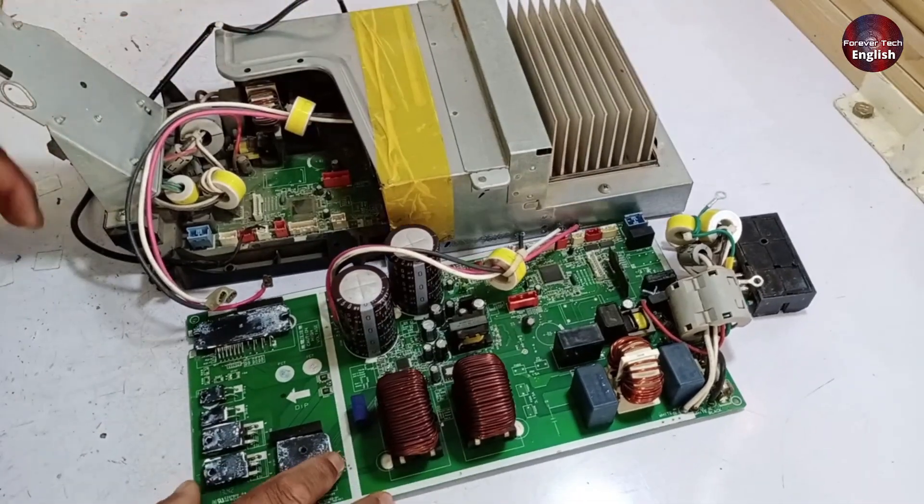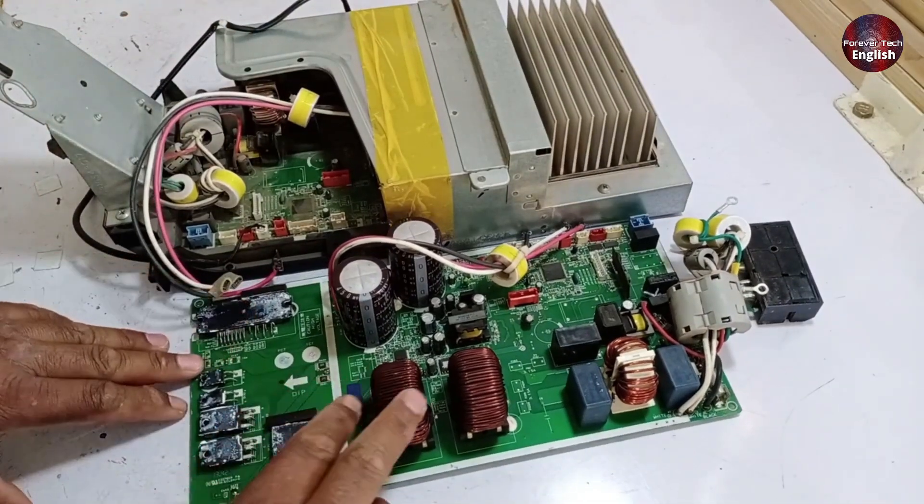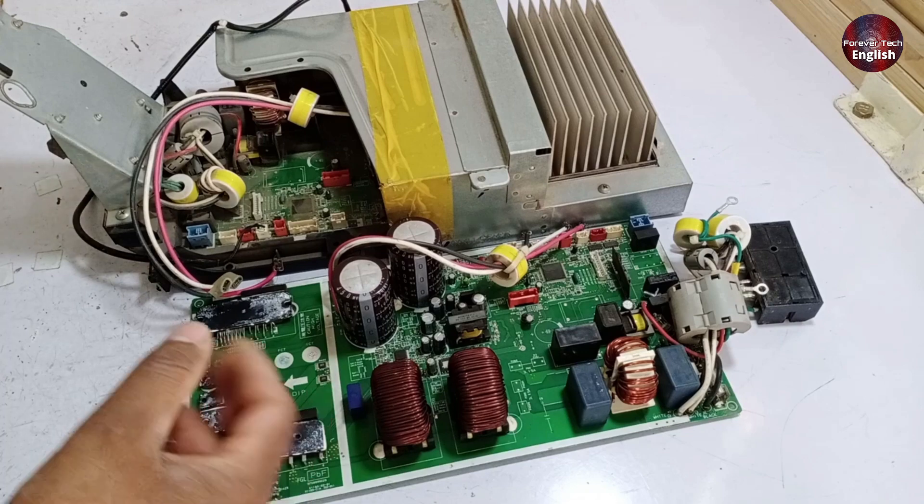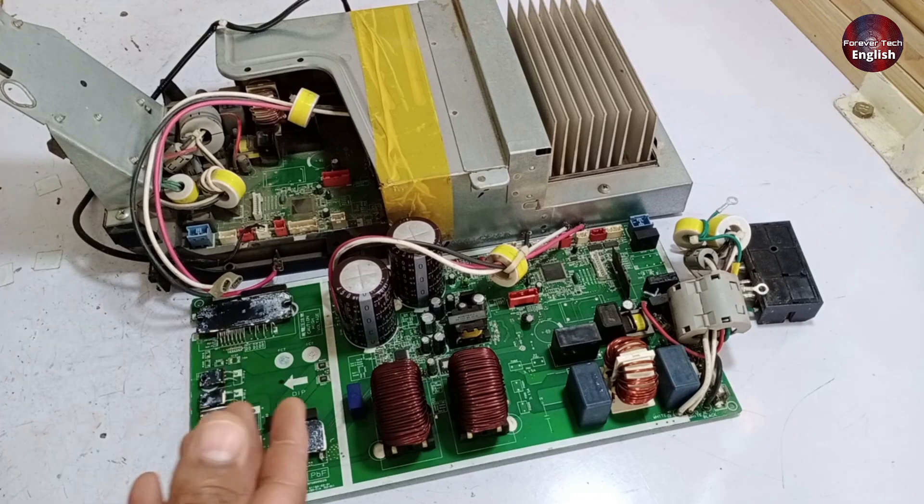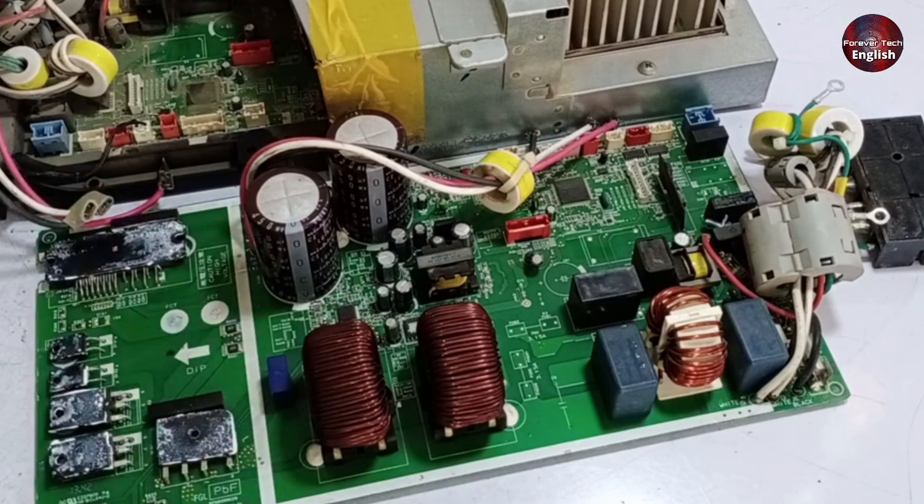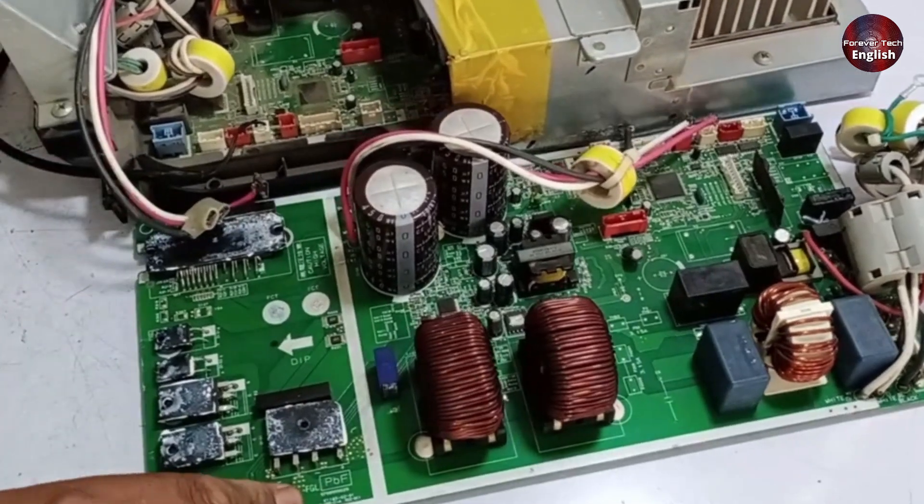I will describe this Fujitsu mini-split air conditioner circuit board, detailing what components are installed, what functions they have, and how they operate. This PCB is functioning but has another fault.